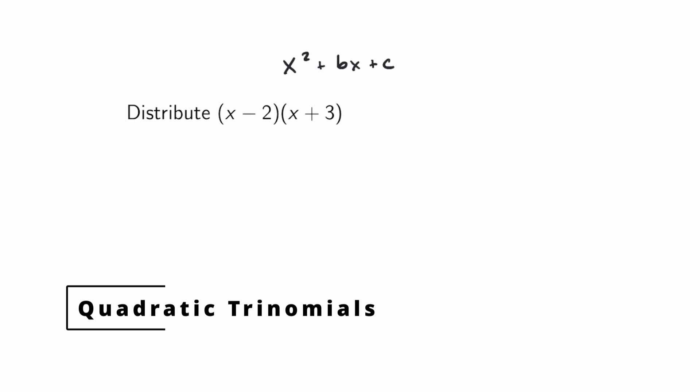To start we want to look at a demonstration. Here we have a product of two binomial factors and we want to see what happens when we use the distributive property to multiply these out.